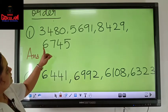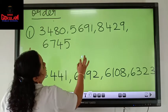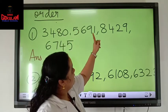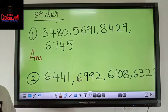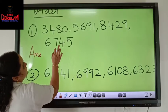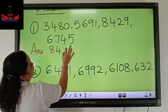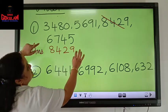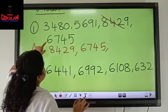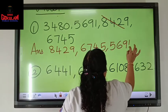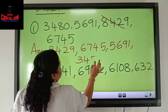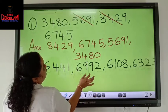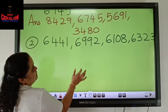Now, which is the biggest number? 3480, 5691, 8429, and 6745. The biggest number is 8429, so you can strike it. Then the next smaller number to that is 6745. Next smaller to this is 5691. And the last number is 3480. After you write 5691 you can cut it off and finally you will get the answer. This method is followed in your book, but you can also follow the other method of directly looking at the number.